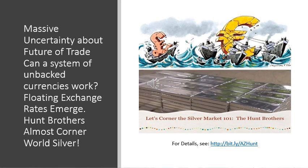Nixon was forced to suspend or de-link dollars from gold and renounce the Bretton Woods Agreement. With the dollar delinked from gold, a system of floating currencies naturally came into existence. There was enormous uncertainty about how the system was going to work, and many predicted it would collapse. The Hunt brothers cornered the world's silver market, or tried to, because they thought the system would collapse and the world would go back to gold and silver.